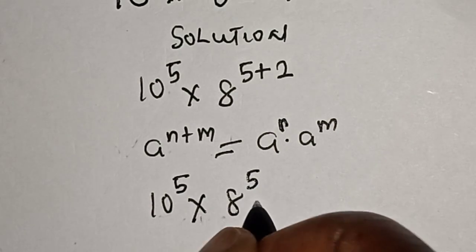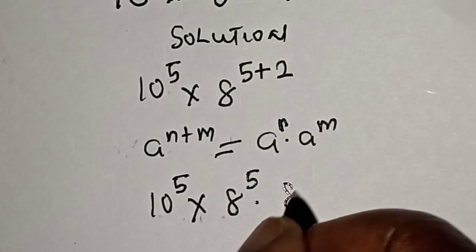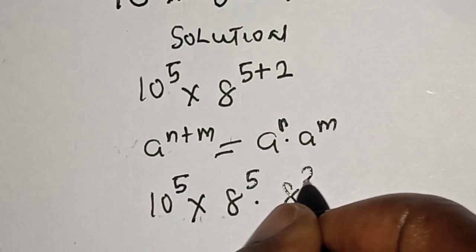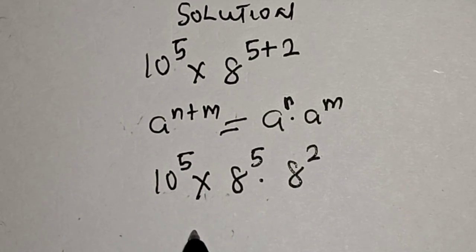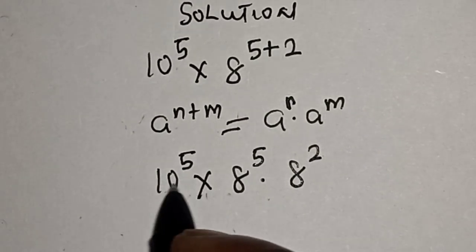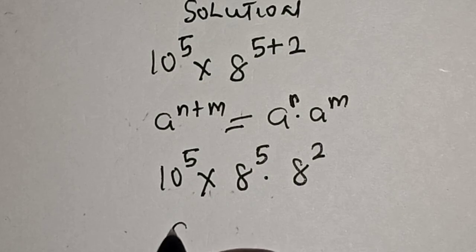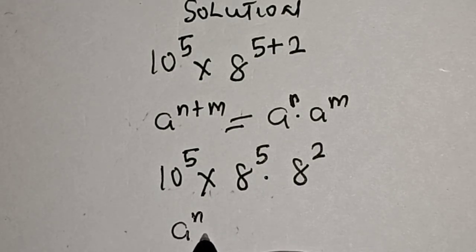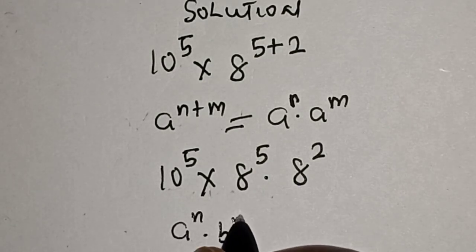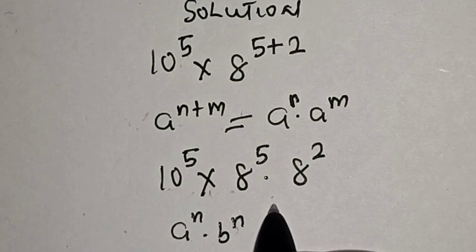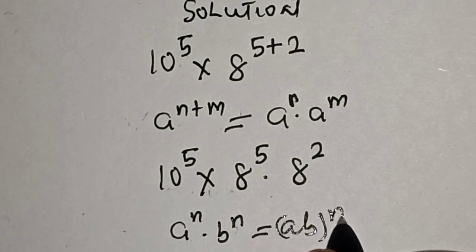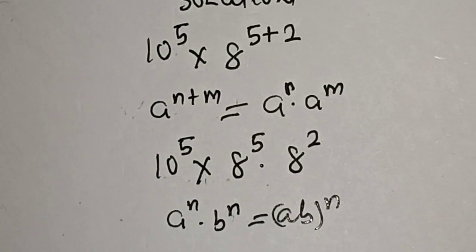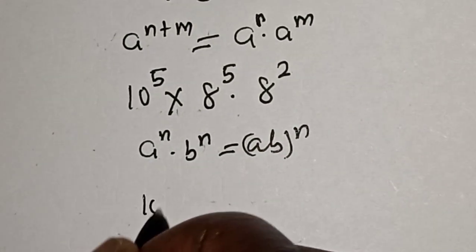Then we have 10 raised to power 5 multiplied by 8 raised to power 5, multiplied by 8 raised to power 2. Now, if you have a raised to power n multiplied by b raised to power n, this is equal to a·b raised to power n.